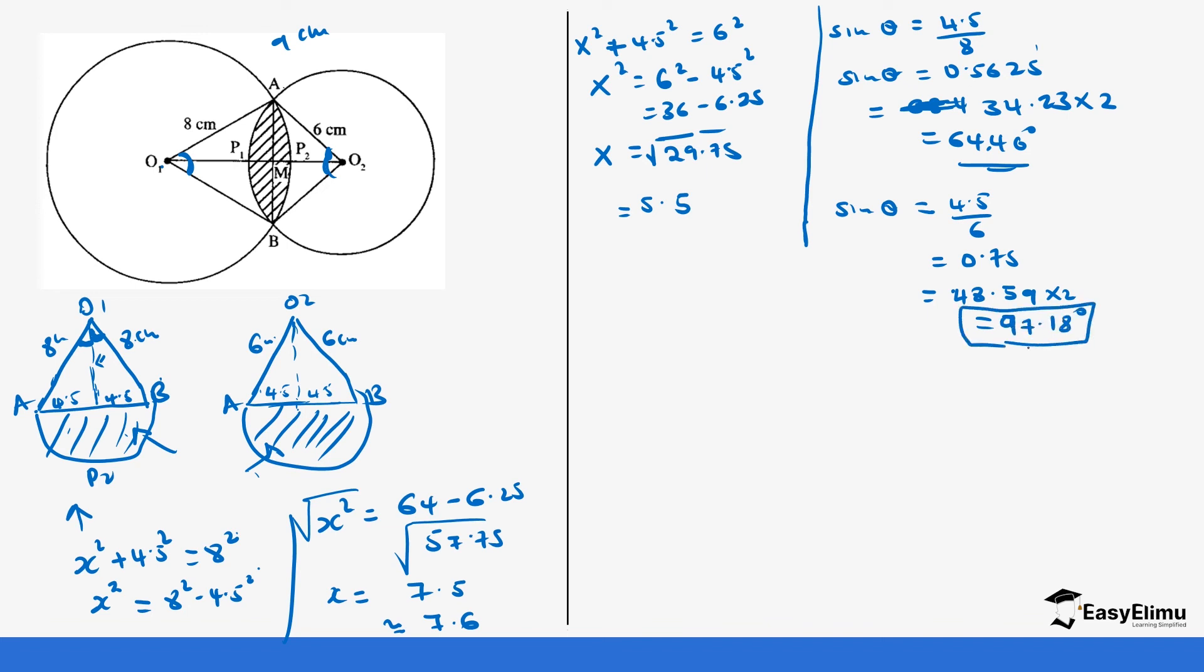We have the angle for the sector of the small circle and the sector of the bigger circle. With what we have now, we can go back to our formula. We can calculate the area of sector minus the area of triangle for both cases. We'll start with the bigger one.